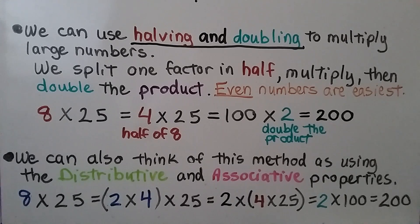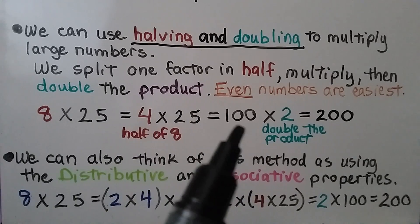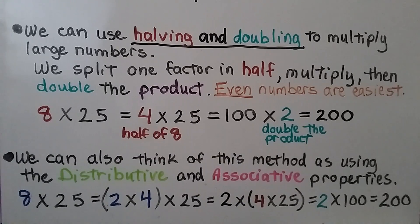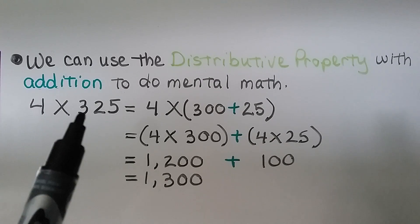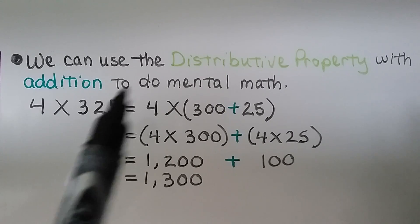We can also think of this method as using the distributive and associative properties. If we have 8 times 25, we can break the 8 into two factors of 2 and 4. 2 times 4 times 25. We can regroup it with the associative property as 4 times 25, which is 100, then multiplying it times 2, which is 200. We cut this in half, we multiplied and got a product, and then we just doubled the product.